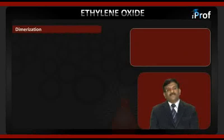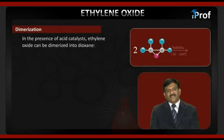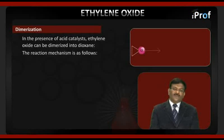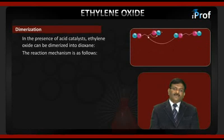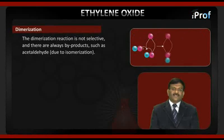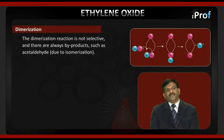Dimerization. In the presence of an acid catalyst, ethylene oxide can be dimerized into dioxane. The dimerization reaction is not selective, and there are always byproducts such as acetaldehyde due to isomerization.